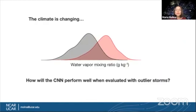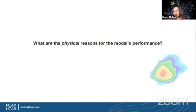We can spend a lot of time tuning and training a model to perform a classification task, but what happens when it encounters an extreme event? As the climate continues to change and we face more extreme outlier events, what will happen to the model's performance in those cases? But perhaps more important is knowing why a model is able to perform well or not — what are the physical reasons for the decisions made by our model?